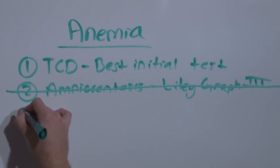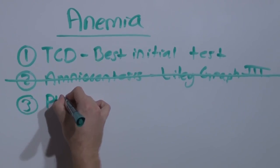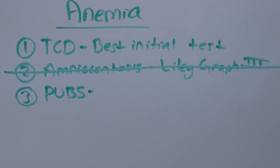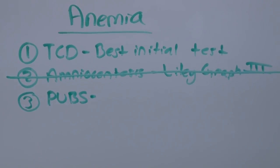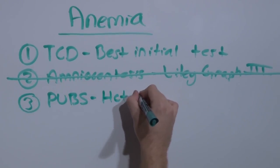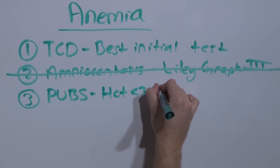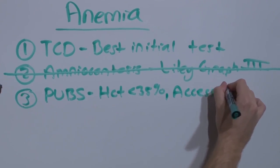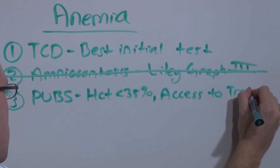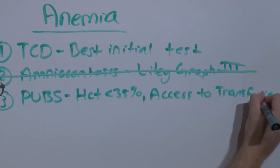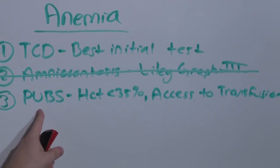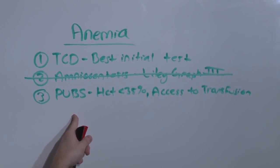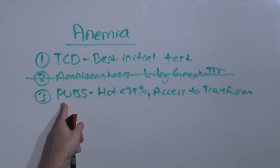In order to confirm the anemia, you do the percutaneous umbilical vein blood sampling, the PUBS. Because what it will give you is direct access to baby's blood, and you'll know exactly what the hematocrit is. If the hematocrit is less than 35%, the baby is anemic, and it also gives you access to transfusion. You put a needle into the umbilical vein. It's very difficult to do and has a very high rate of fetal loss, but if you get that line, you're able to then transfuse baby.